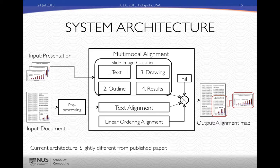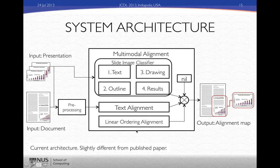Here's the system architecture. We take the input presentation and document, and send the presentation to a slide image classifier — the rounded box in the middle. The textual information from the document is sent into a text alignment algorithm, and the linear ordering preference is also enforced. We put all of these pieces of information into a fusion operation to output the final alignment map. We'll discuss each of these parts briefly in the following slides.